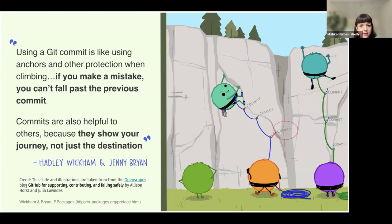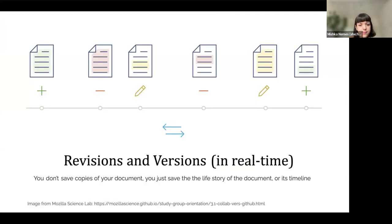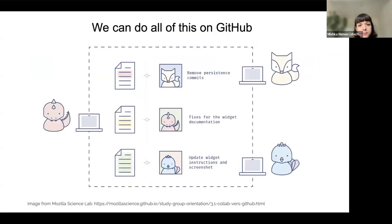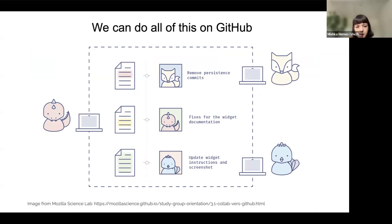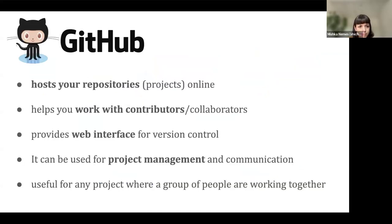Through Git we can see revisions and versions in real time without necessarily changing the file — we can see the evolution and the timeline. We can see how different individuals have contributed, with different characters updating different things and then all coming back together to the same file.